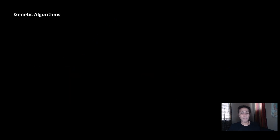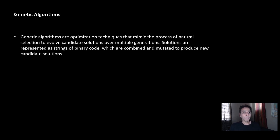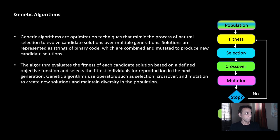I'll quickly summarize genetic algorithms, even though I talked about them in the last few videos. They are an optimization technique that mimics the process of natural selection. We looked at how evolution happens — solutions are typically represented by some sort of binary code, and then you combine and mutate them, following a natural process. They evaluate the fitness of each solution.